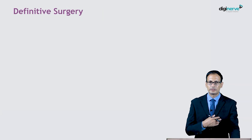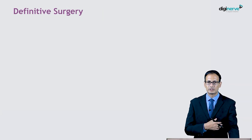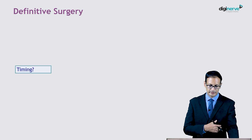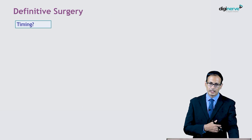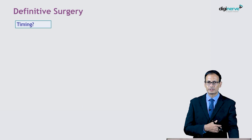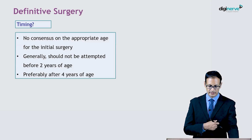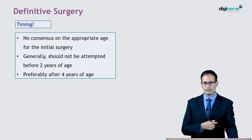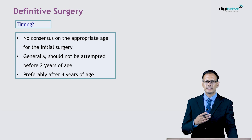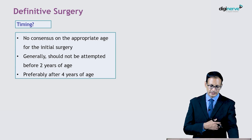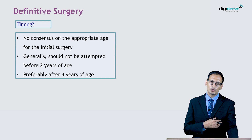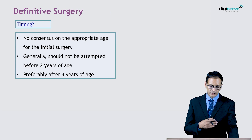After prophylactic treatment comes definitive surgery. The most pertinent question is timing — when to do the surgery. There is no consensus on the timing of surgery. Generally, it should not be attempted before 2 years, and ideally surgery should be performed after 4 years of age.